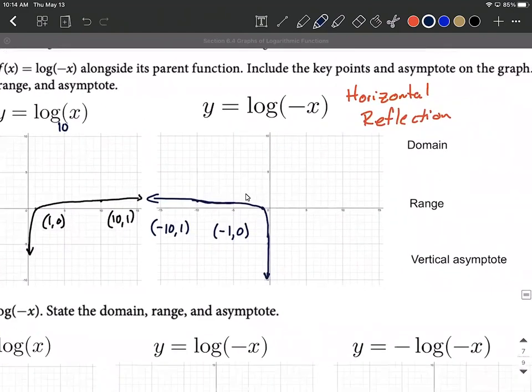Now as far as the domain, range and vertical asymptote goes, the vertical asymptote is still going to be at the y-axis, so we'd say that's an equation of x equals zero. The range on every single one of these logarithmic graphs is going to be from negative to positive infinity.